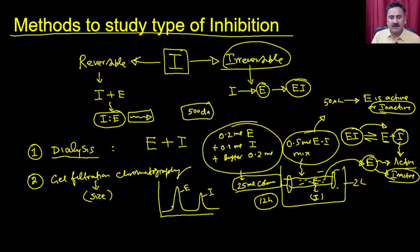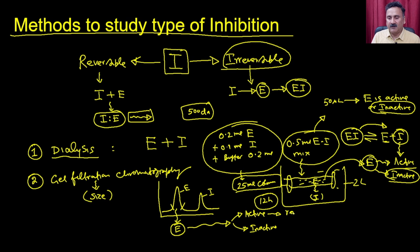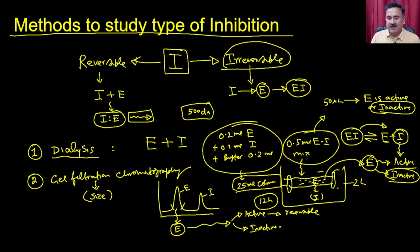Collect the enzyme peak and ask whether the enzyme is active or inactive. If active, the inhibition is reversible — you successfully removed the inhibitor. If inactive, the inhibition is irreversible, because even after separation, the inhibitor remains covalently bound. These are the two main methods.